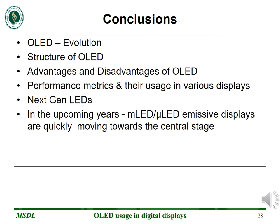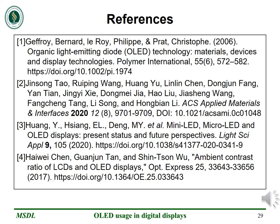Let me conclude today's presentation by quickly perusing the topics that we have covered: organic LED evolution, structure of organic LED, the advantages and disadvantages, the performance metrics and their usage in various displays, and next-gen LEDs. We have reviewed the recent progress and discussed the future prospects of emissive mini-LEDs, micro-LEDs, organic LED displays and mini-LED backlit LCDs. We understood that organic LED displays experience a trade-off between lifetime and luminance. This is the reason that in the upcoming years, mini-LEDs and micro-LEDs are going to be used in almost all kinds of digital displays available today, and this is quickly moving towards the central stage. Thank you very much for listening.